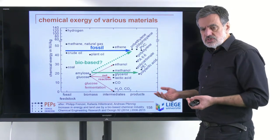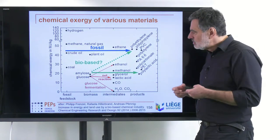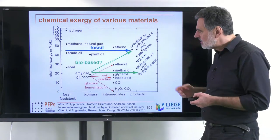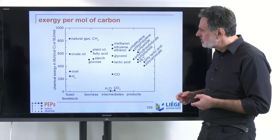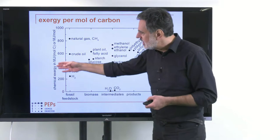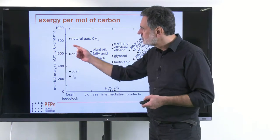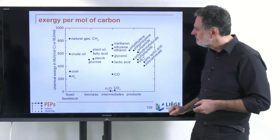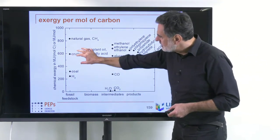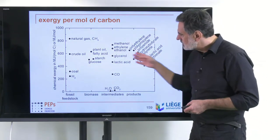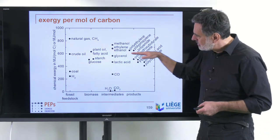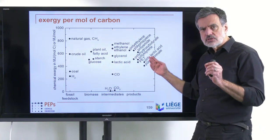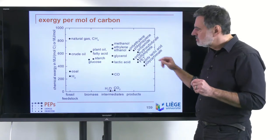This is now the chemical exergy in megajoules per mole of carbon — or per mole where no carbon is present, such as for hydrogen. There you see that everything is more or less at a horizontal level, much closer together. So conversions between these things, just accounting for the carbon, will be more or less horizontal.